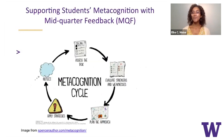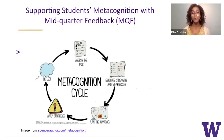Metacognition refers to the thinking processes and it happens when we analyze and assess a task that we've done, and we're able to evaluate the strengths and weaknesses, then make plans and goals for a new approach, apply those strategies for improvement, and reflect upon that. This is a cyclical process and research shows that metacognitive strategies can support student academic success.